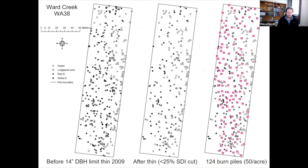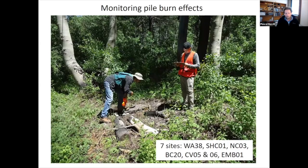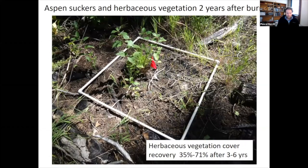We're monitoring those burn piles with annual assessments of the vegetation. Now it's seven sites. As you can see in this picture, this is a burn pile where aspen suckers are regenerating. We're getting some grasses and herbaceous vegetation, and we're seeing a recovery that's variable but in the order of 35 to 70 percent after several years.